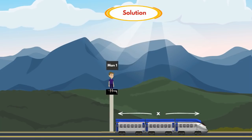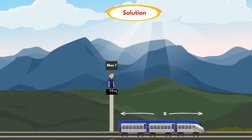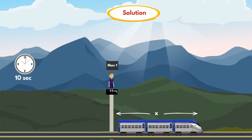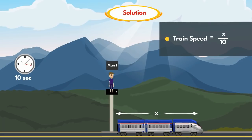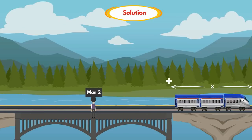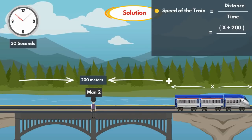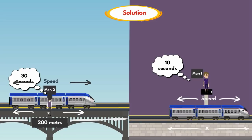Let's assume the length of the train is x meters. The train covers x meters in 10 seconds, so the speed of the train equals distance divided by time, which is x divided by 10. For Man 2, the distance is x plus 200 meters and the time is 30 seconds, so the train speed equals (x + 200) divided by 30. In both cases the speed of the train is equal, so x/10 = (x + 200)/30.